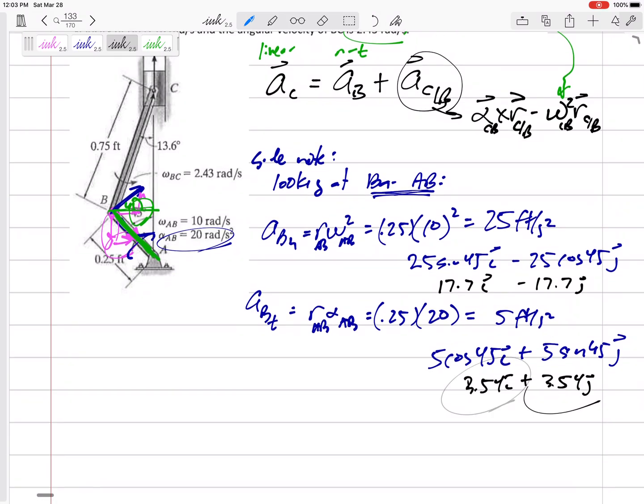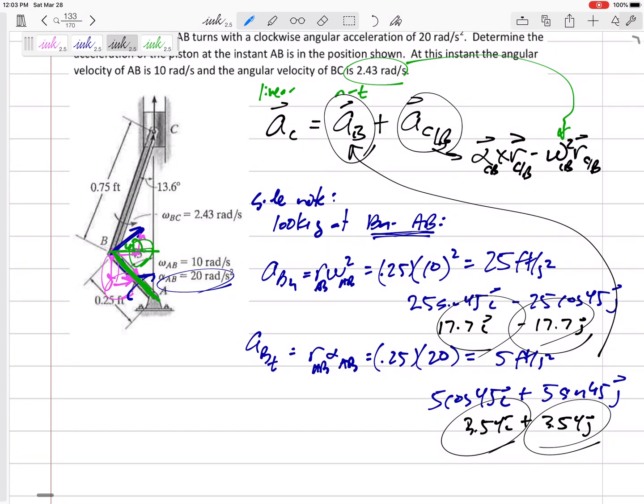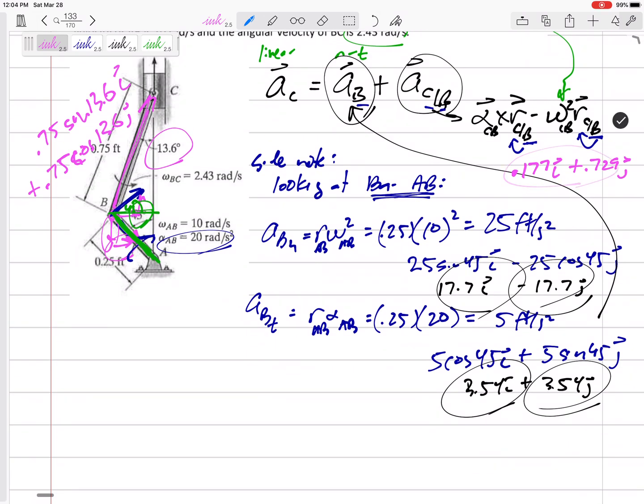Alright, so one, two, three. You can go ahead and combine the I's and J's. But all four of those go into that one little term right there in our relative acceleration problem. Okay. So now I think I am ready to plug things in as much as I can. Let me go ahead and do this R. So since I did C, B, C slash B, this is from B to C. From B to C would be 0.75 sine of 13.6 in the I and up 0.75 cosine 13.6 in the J. That turns out to be 0.177 in the I plus 0.729 in the J. So that's going to be the R for both that term and that term.